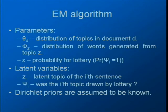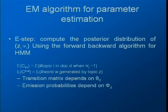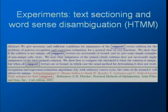The EM algorithm is an iterative algorithm distinguishing between latent variables — over which we average — and parameters for which we find MAP estimators. In our work, the parameters are theta, phi, and epsilon, and the latent variables are Z and psi. The E-step consists of a forward-backward algorithm, and the M-step has closed-form formulas. The result is a MAP estimation for the parameters and a distribution over the latent variables.